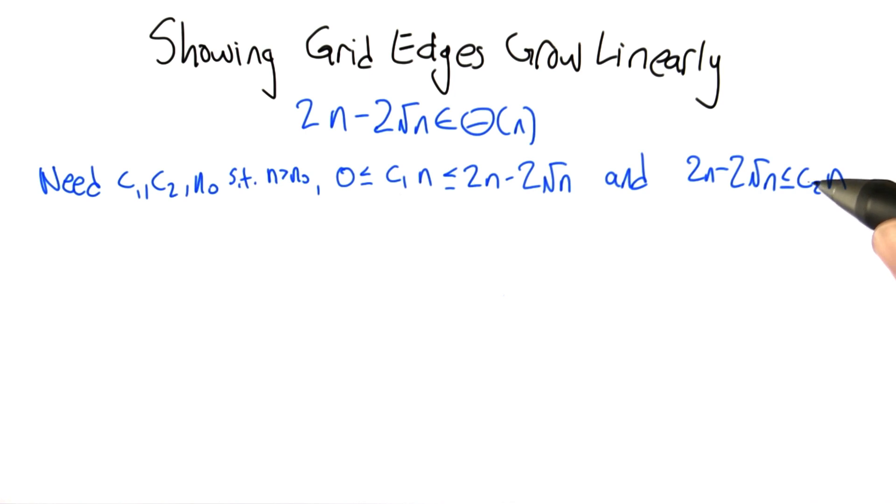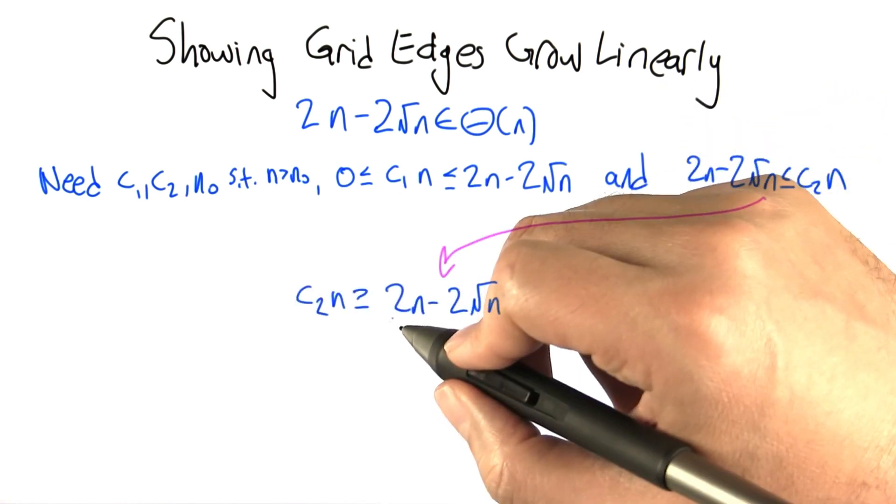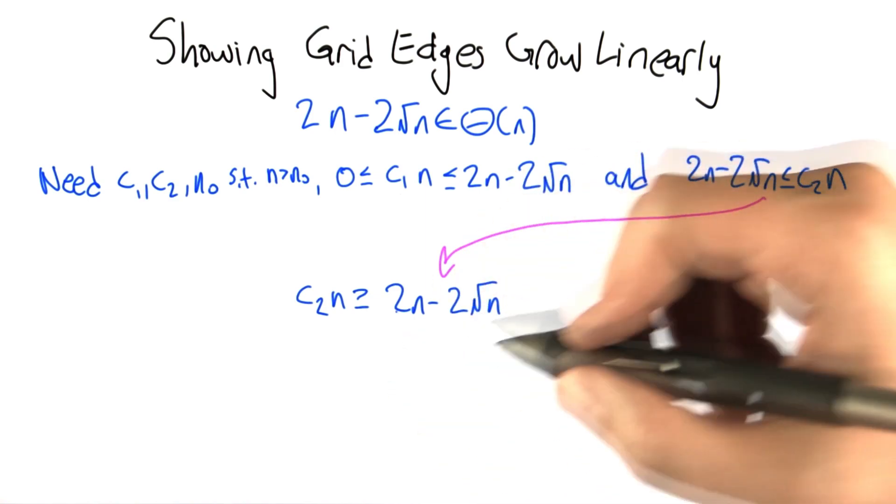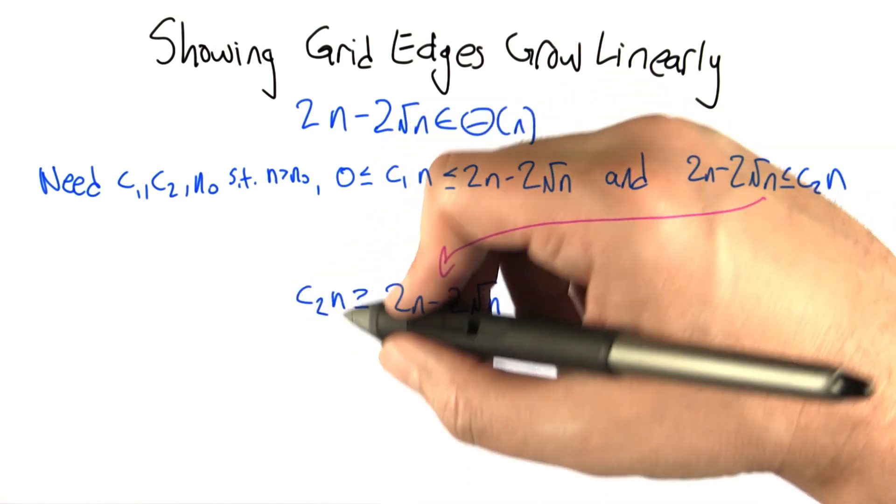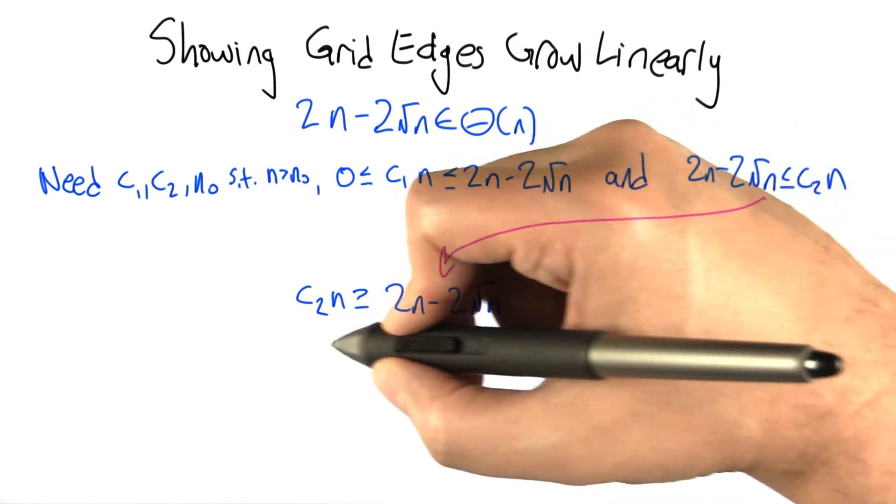What c2 can we plug in here so that we're guaranteed that this will be above this expression? So if we just copy this inequality down, just flipping it around, make it a little easier to think about. We want a c2 so that c2 times n is bigger than this. Divide through by n.